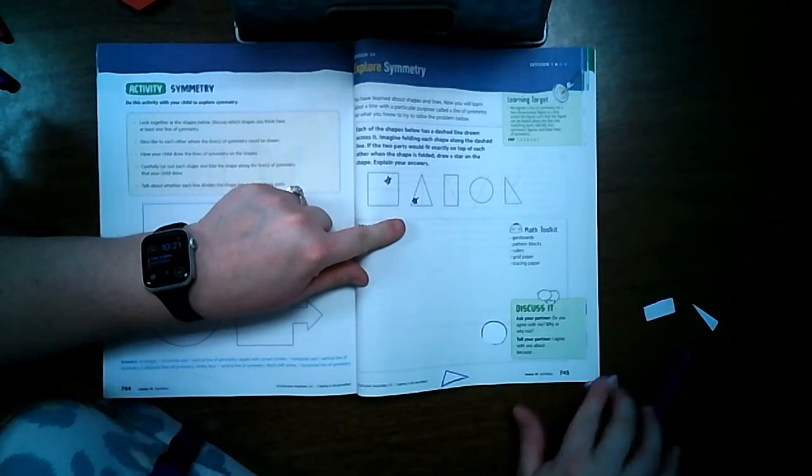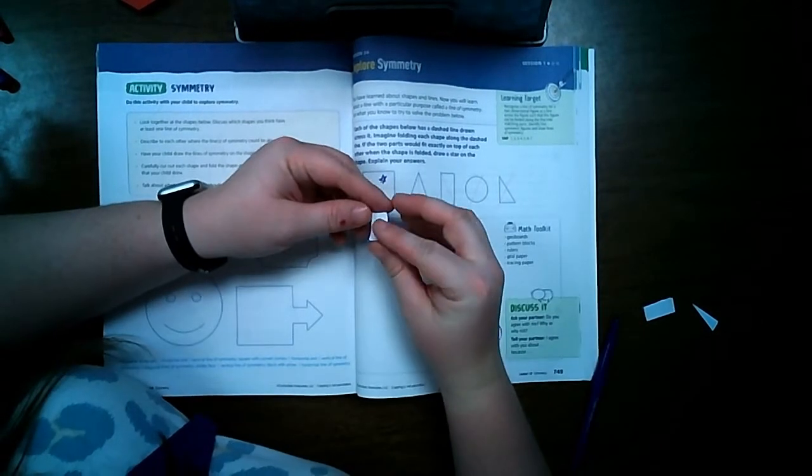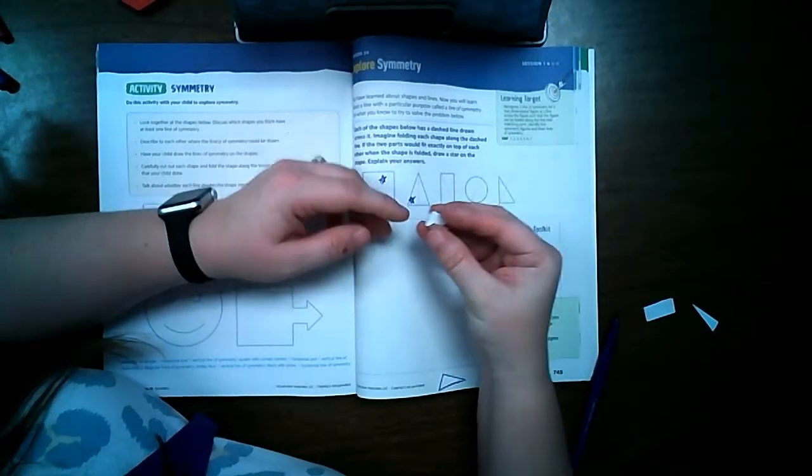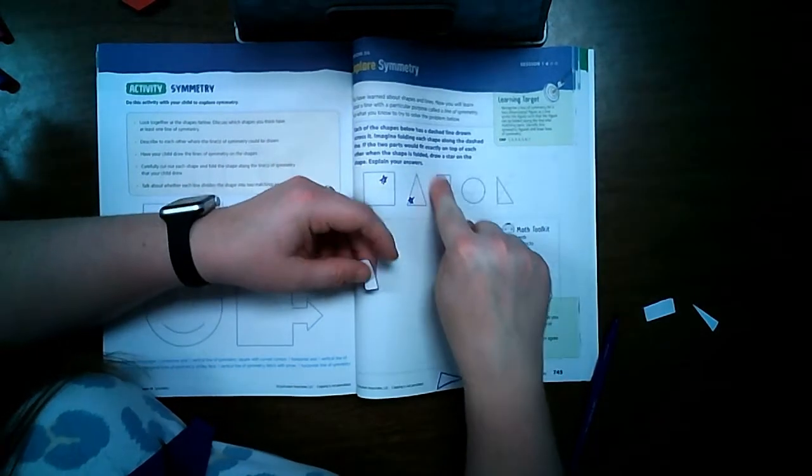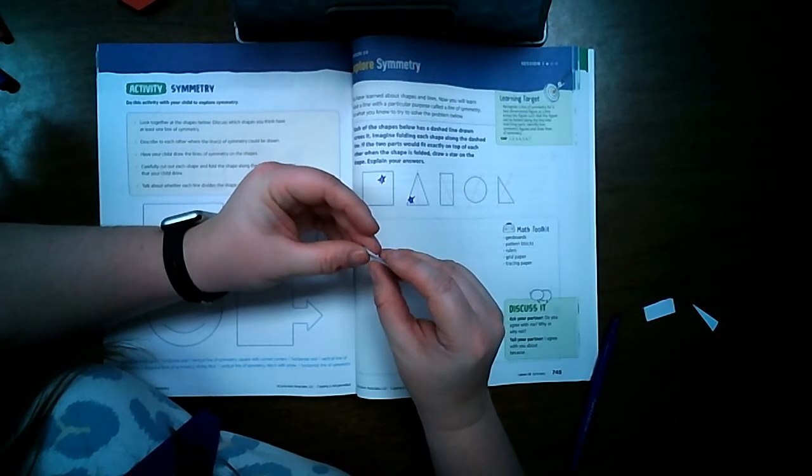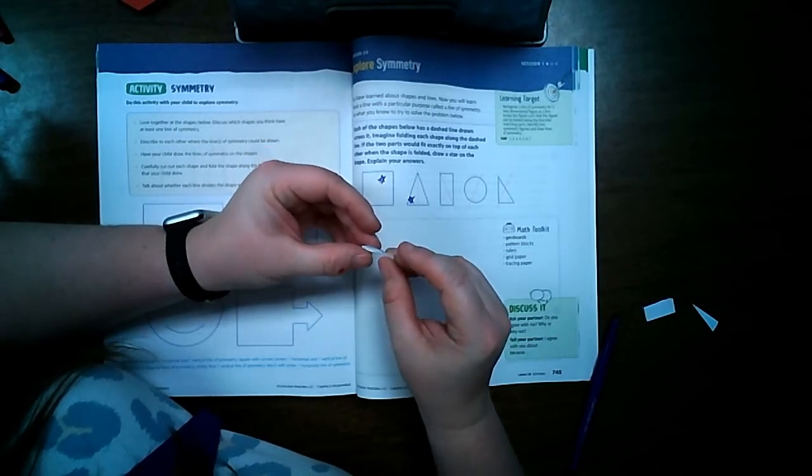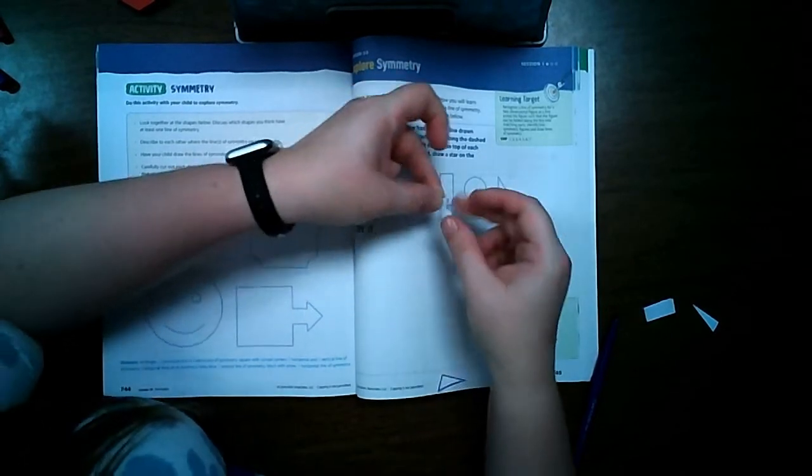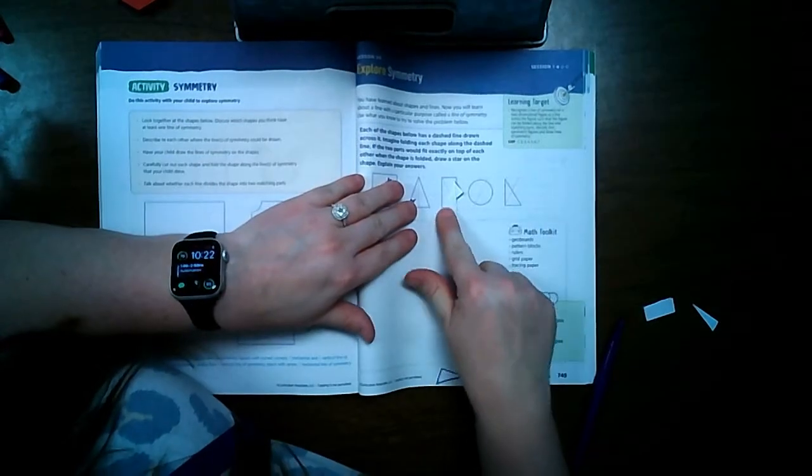Now I'm going to take my rectangle. If I were to fold my rectangle in half like this, it would be symmetrical. But as you can see here, that's not how they fold it. They fold it from corner to corner. And when you fold a rectangle from corner to corner, it looks like this.